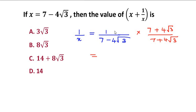So the numerators get multiplied. 1 times 7 plus 4 radical 3 gives you 7 plus 4 radical 3.